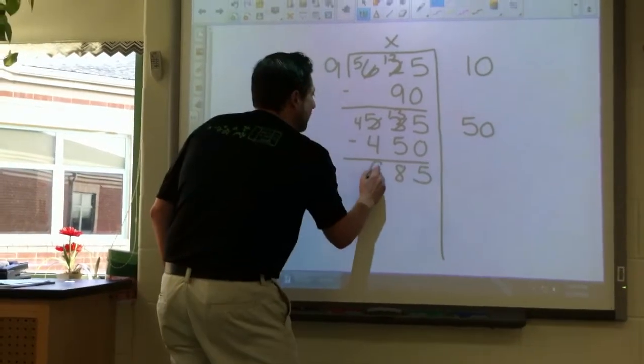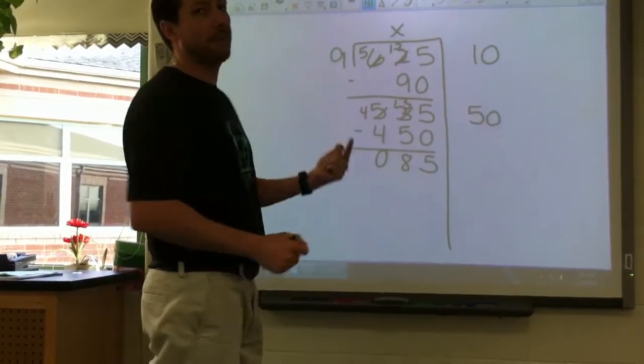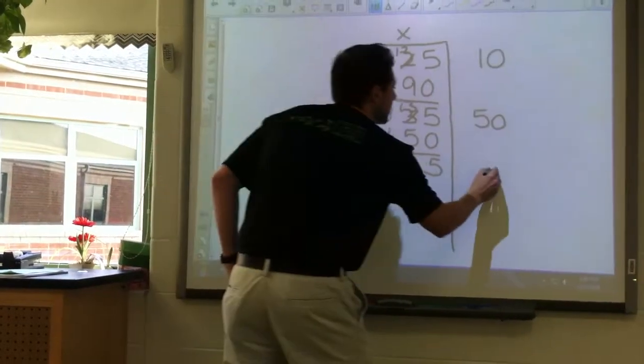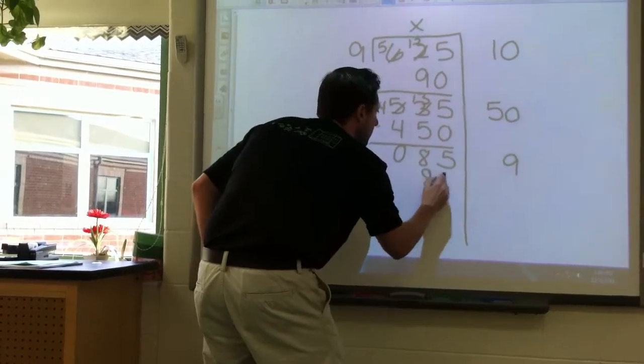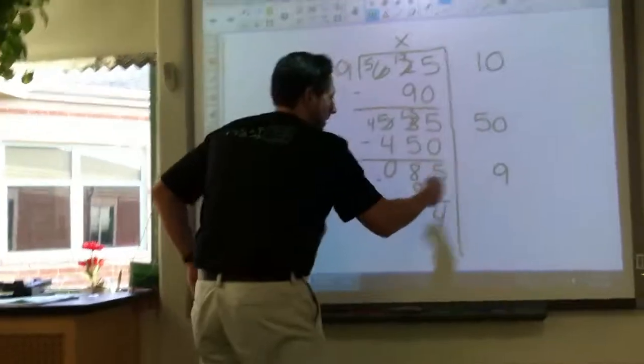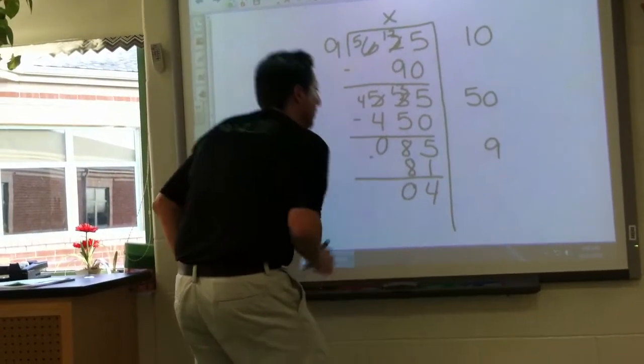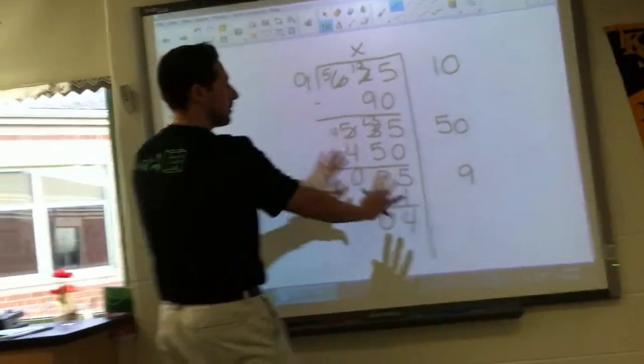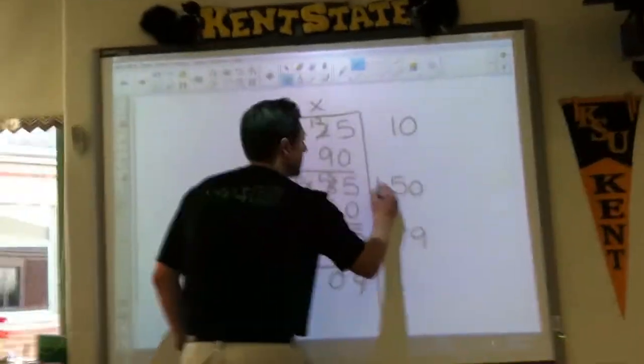Regroup just a bit. We're looking at 85 now. I know a factor, 9 times 9. 9 times 9 being 81. 5 minus 1 being 4, 8 minus 8, zip. And we are looking at 4. 4 is less than my divisor, so it's time to call it quits here. Let me add this up.